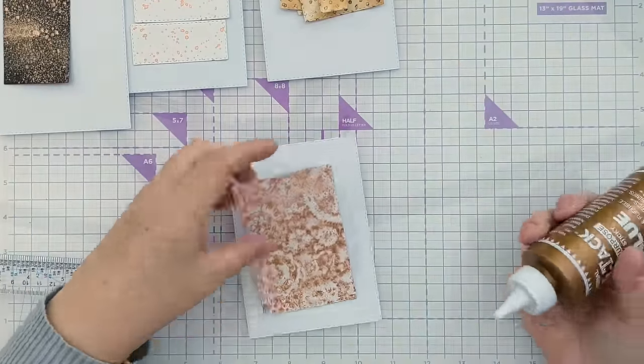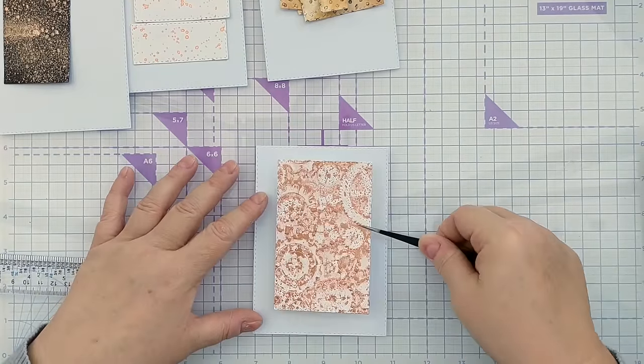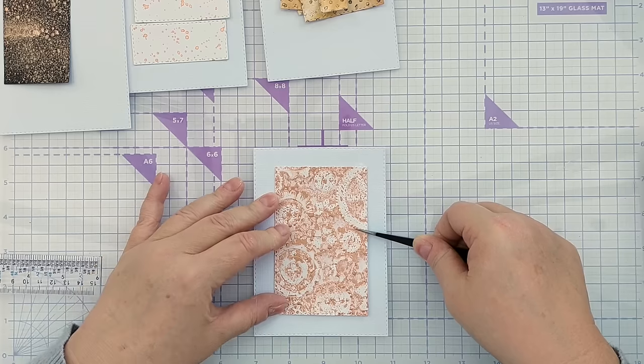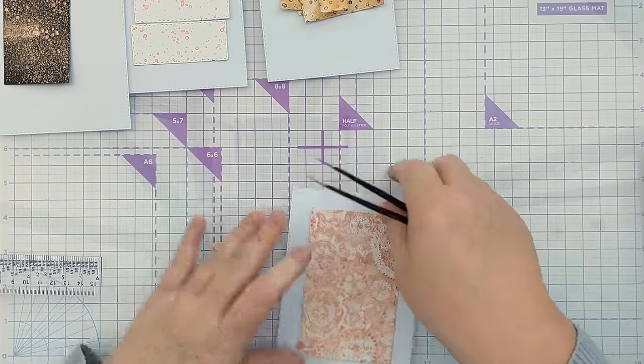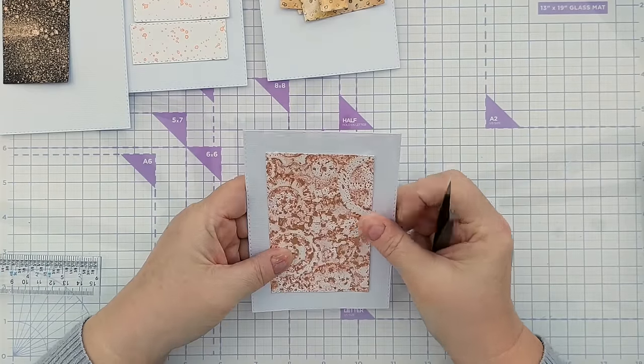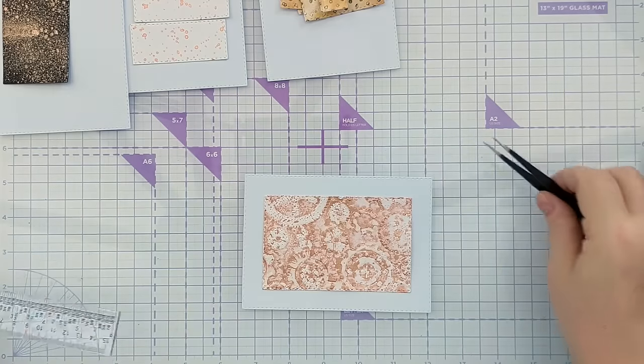So I'm going to stick these down. I think this background is the shimmery copper embossed piece I made in my 16 ways to use shimmer sprays video. If you want to check that out, I will leave a link in the video description. I want to get that fairly central, just make sure it's straight.